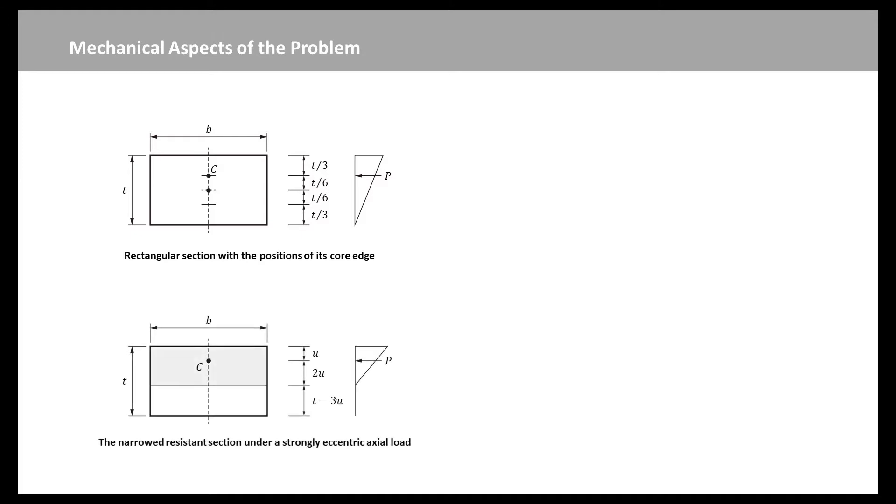Elastic flexural deformations must be taken into account in the analysis of an eccentrically loaded pier. Such deformations increase the axial load eccentricity and narrow the resistant areas of the pier sections as shown in the figure. With gradually increasing axial load intensity, this effect becomes more and more relevant and the pier may collapse.